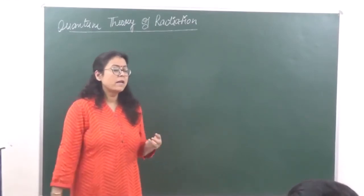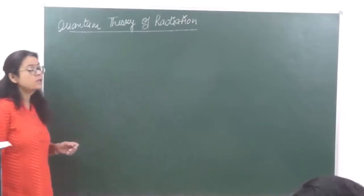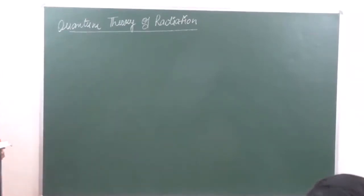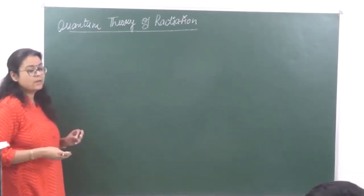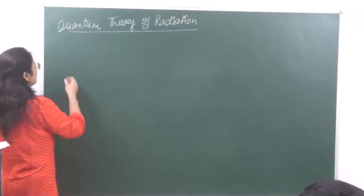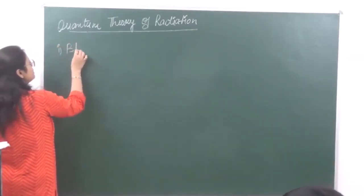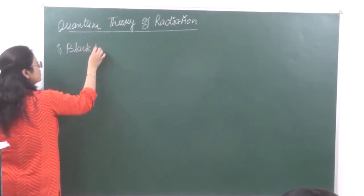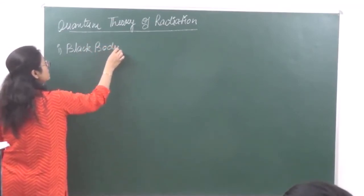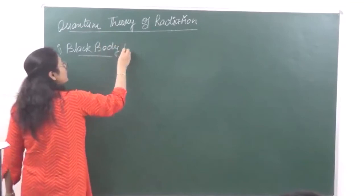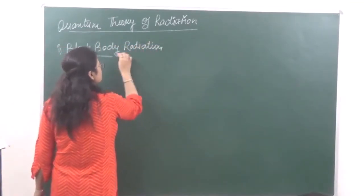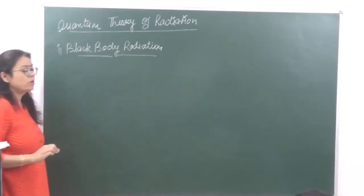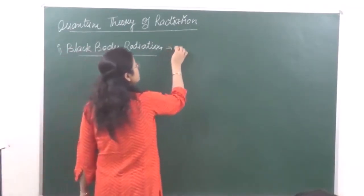Both these effects — black body radiation and the photoelectric effect — were explained by the quantum theory of radiation. When we talk of quantum theory, electromagnetic radiation was unable to explain two phenomena. The first one was known as black body radiation. So, what is a black body? A black body is an opaque substance.